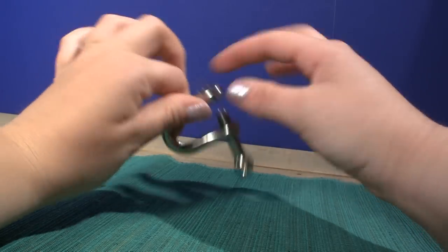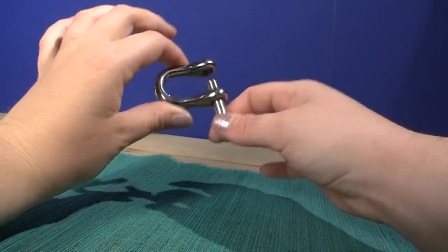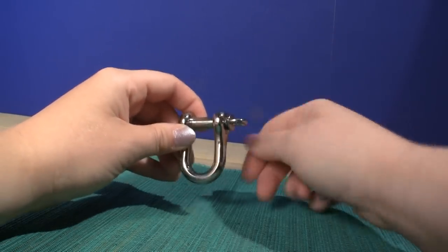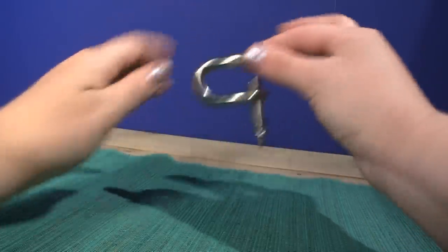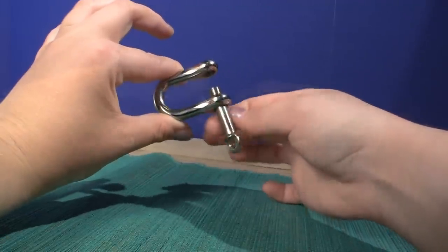My favorite part, though, is it's threaded on both sides. I am clumsy. I lose pieces, drop things. That's the best part about this—it's captive, so it's got threading on both sides. When you go to unscrew it, you can't drop the piece. You have to fully unscrew it to take the pin out.